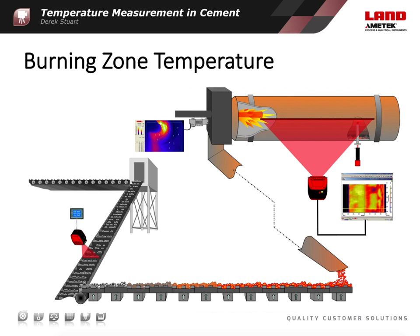Radiation thermometers, also known as pyrometers, allow a non-contact temperature measurement, but their effectiveness is limited by the high dust loading, especially within the burning zone, also known as the firing zone. Nevertheless, burning zone temperature is an important measurement, because it shows whether there has been a complete transformation from C2S to C3S — a process which occurs in the region of 1300 to 1450 degrees Celsius, or 2372 to 2642 degrees Fahrenheit.